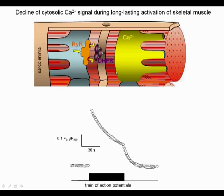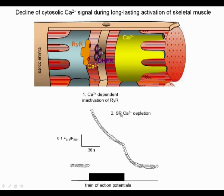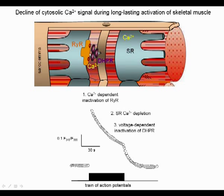Since then, measurements of cytosolic calcium changes have shown that the calcium signal also progressively declines while stimulation is maintained. Three main processes may contribute to this decline. First, calcium-dependent inactivation that partially shuts the calcium release channel. Second, calcium depletion in the SR lumen due to calcium release. And third, voltage-dependent inactivation of the dihydropyridine receptor that leads to closure of SR calcium channels.